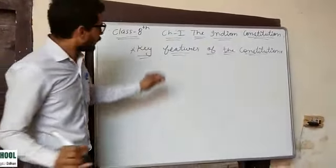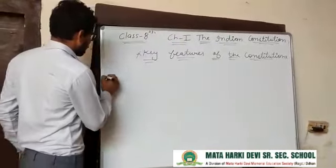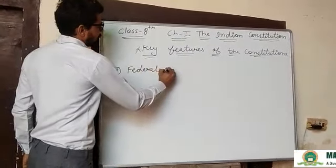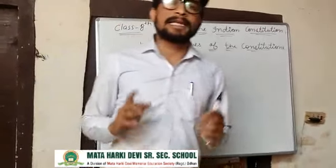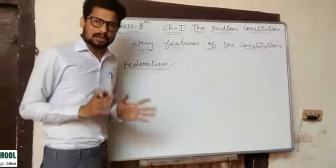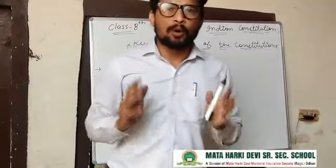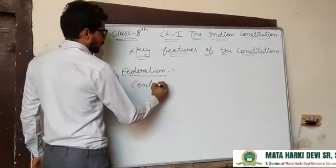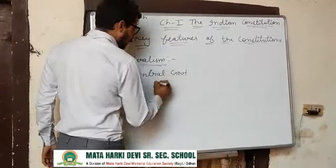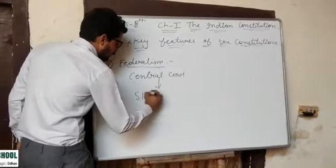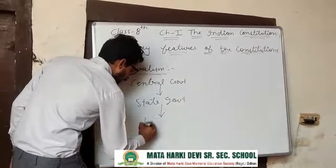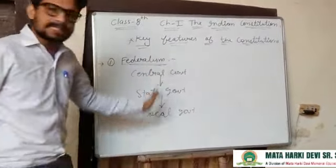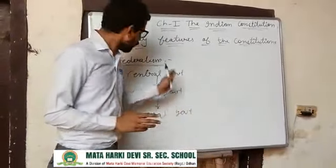There are five key features of the Indian Constitution. The first is federalism. Federalism refers to more than one level of government. India has more than one level of government — like the central government, below that the state government, and below the state government, the local government. So we can say that India has a federal system of government.